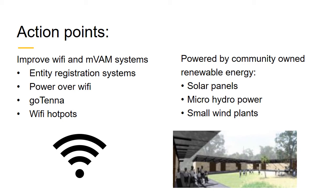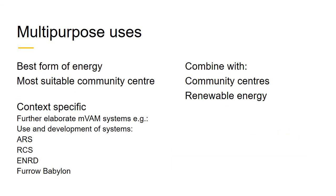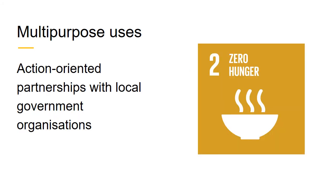Renewable energy options include solar panels, micro hydropower plants, or small wind plants supplying community centers with needed energy. The most suitable energy form and best available community center should be determined per country and per community according to context. It is important to further develop mVAM systems as well as systems such as ERS, RCS, ENRD, and Ferro-Babylon, combined with community centers and renewable energy for the best outcomes. Connect to Provide suggests action-oriented partnerships with local governments and organizations, fighting together with the World Food Programme for a world free from hunger.